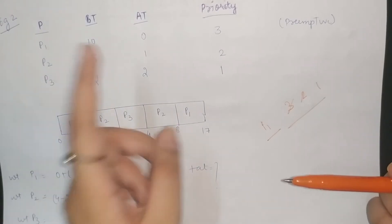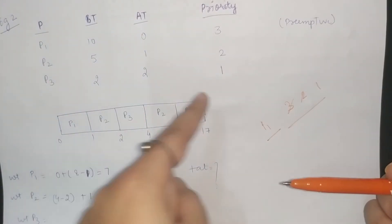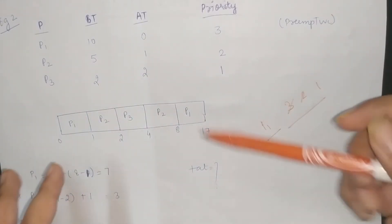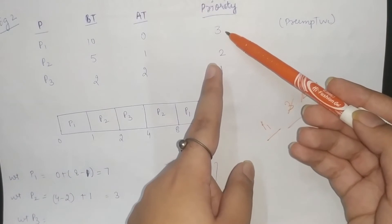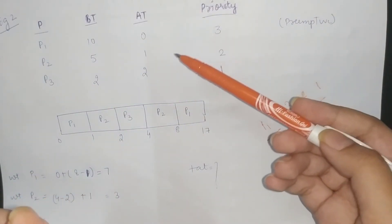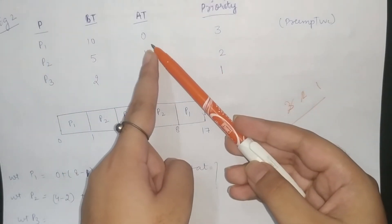Priority is considered, but arrival time has the first priority. Look at the arrival time, P1 arrives at time 0.